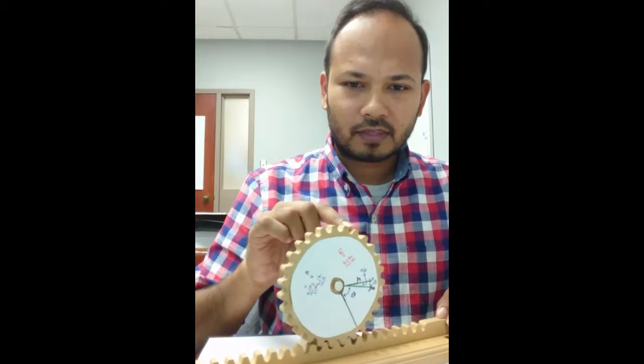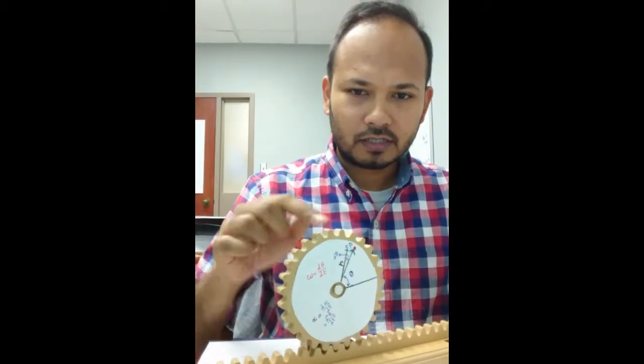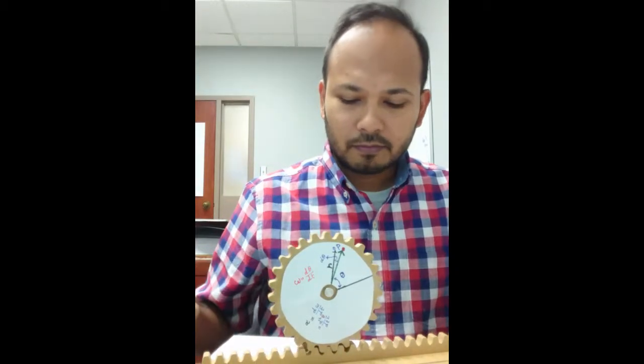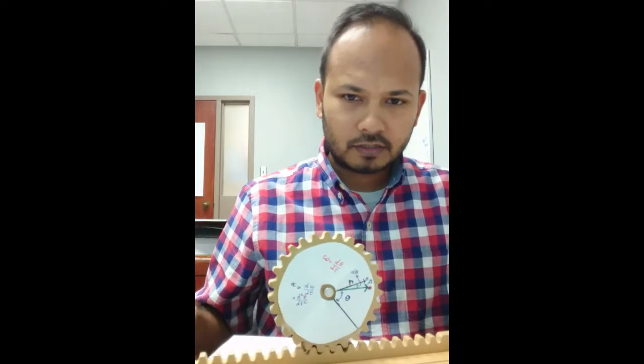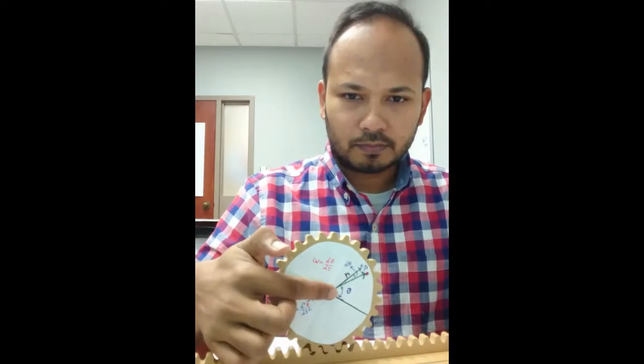The circular gear moves. So any point, for example this point, the red point, if you take, if I move the gears, these points rotate about this point.